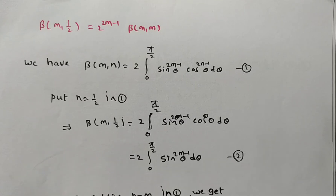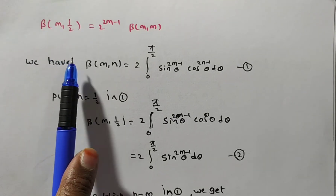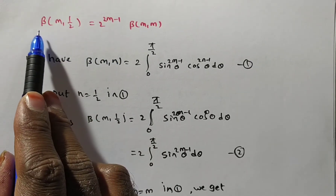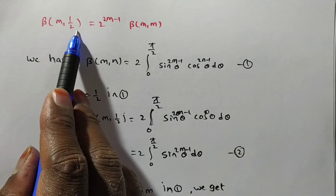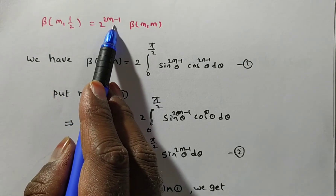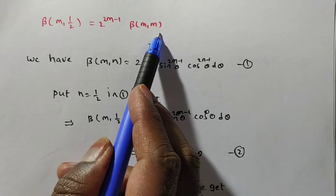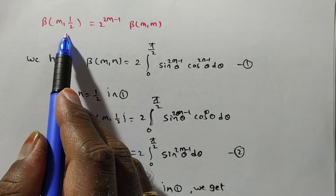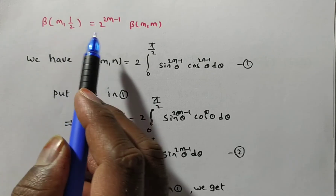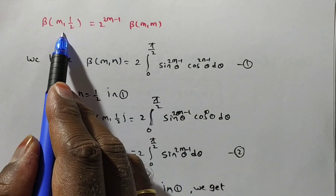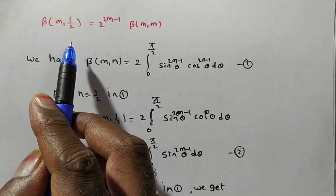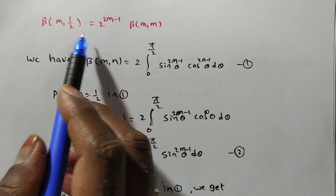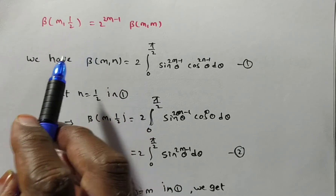Friends, in this video we are discussing applications of the beta function. Now we have to prove that beta of m comma 1/2 is equal to 2 to the power of 2m minus 1 times beta of m comma m. To prove this, we find the LHS part as well as the RHS part. If the LHS gives some value, then the RHS should give the same value, and then we can say these two are equivalent.